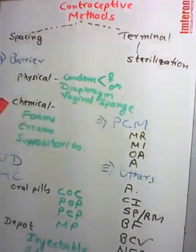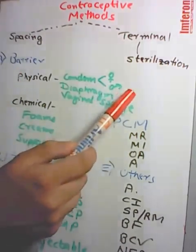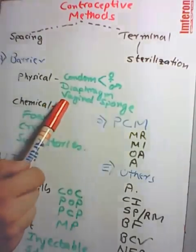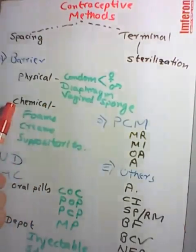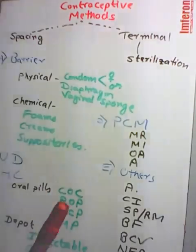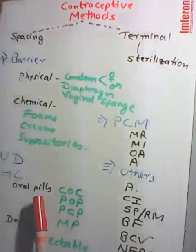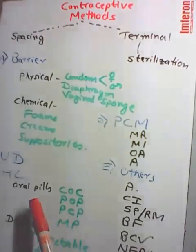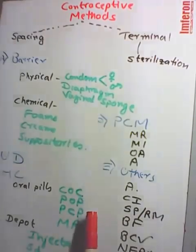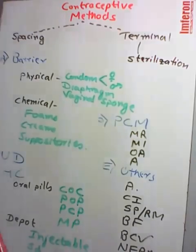Under other methods: abstinence (A), coitus interruptus (CI), rhythm/safe period method (SP), breastfeeding method, birth control vaccine (BCV), and natural family planning methods (NFPM). NFPM are of three types: basal body temperature method, cervical mucus method, and symptothermic method.